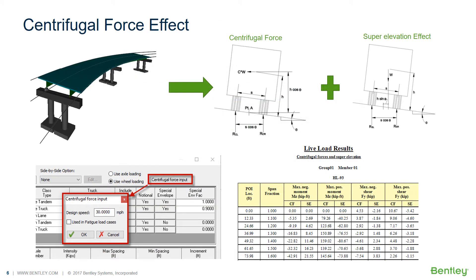Next is centrifugal force effect, accessed through the loads menu. The default is to use axle loading, but if you want to consider centrifugal forces, you tick on wheel loading instead. You then select the centrifugal force input button, set a design speed for the trucks, and specify whether this is also applied to fatigue load cases. The output will generate live load results including both centrifugal forces and superelevation forces for maximum positive and negative moments and shears.